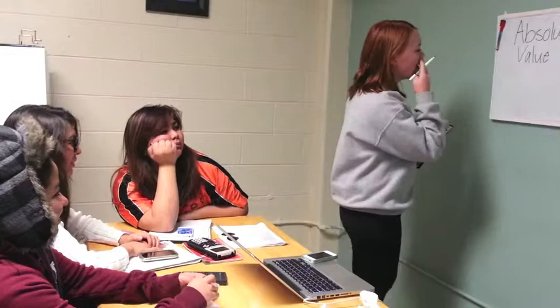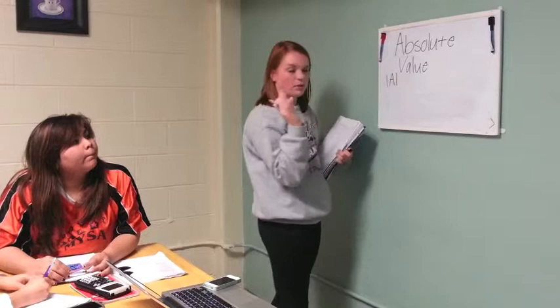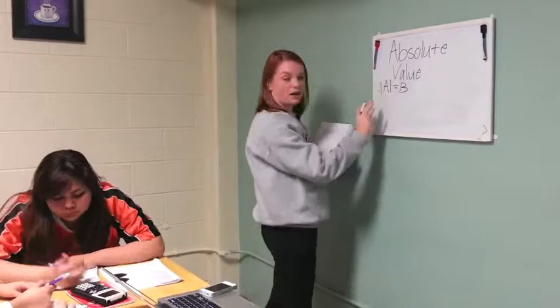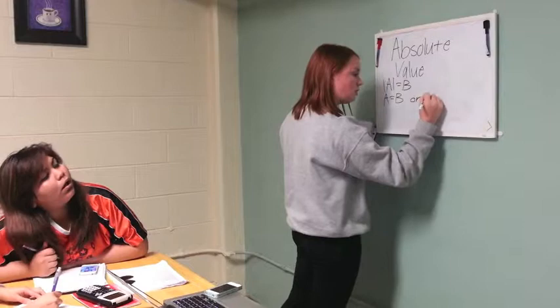Absolute value is a distance from zero. So, let's say that the absolute value of A, and there's lines on each side of it, so that represents the absolute value, equals B. And you take the absolute value bars away and there will always be two answers. It could be A equals B, or it could be A equals negative B.